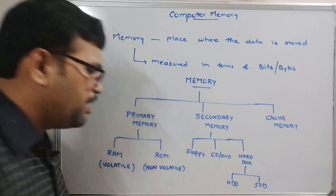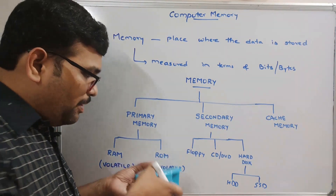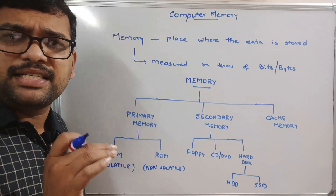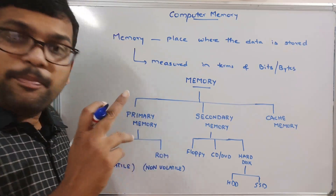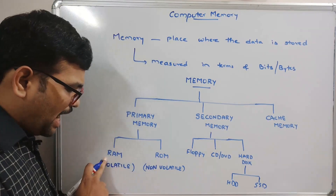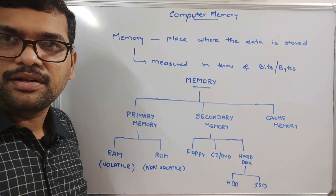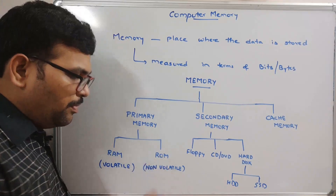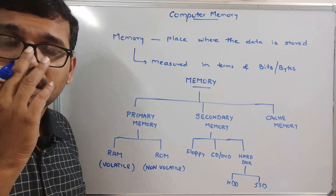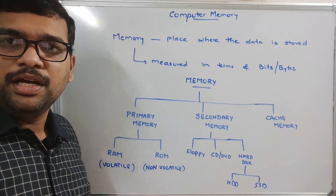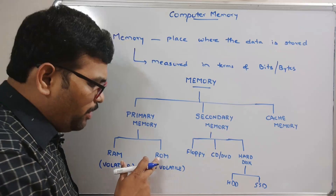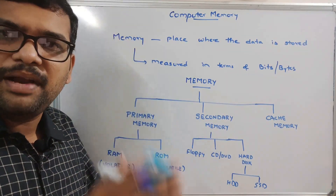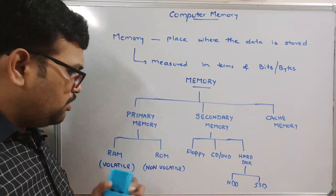Non-volatile memory means whenever the power is off, the data available in ROM will not be erased — it remains the same. Whatever process we are going to execute, that process will be stored in RAM and given to the processor. ROM contains the bootstrap loader, which is used to load the operating system into RAM. That's why whenever the power is off, the data in ROM — including the bootstrap loader — will not be erased.